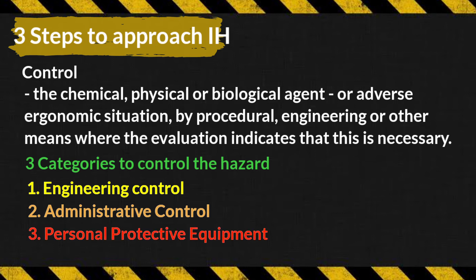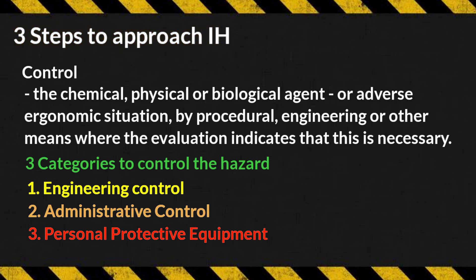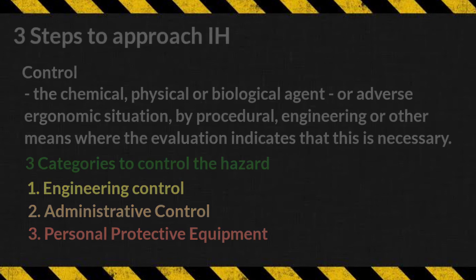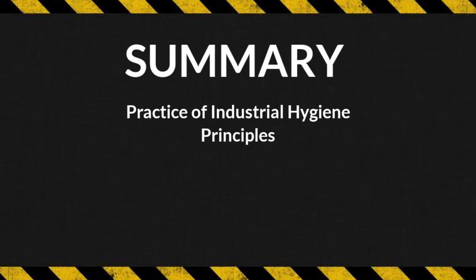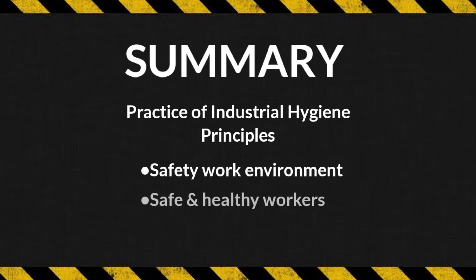The third category is personal protective equipment — using a protective barrier to protect the worker. In summary, the practice of industrial hygiene principles leads to a safe work environment and healthy workers. It is a means of protecting workers through improvements to the work environment and a preventive approach to eliminate or minimize the occurrence of occupational diseases.